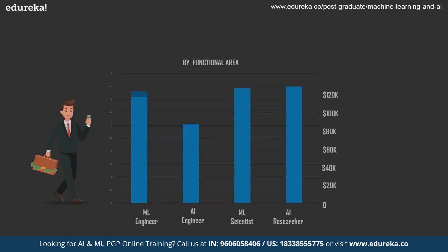Let us take a look at the salary trends. For a machine learning engineer, the average salary is around $114,000 a year. For a machine learning scientist, the average salary is around $120,000 a year and can go as high as $150,000. For an AI engineer, the average salary is around $90,000 but can go as high as $140,000 a year. And for an AI researcher, it goes from a $125,000 average to as high as $150,000 a year.